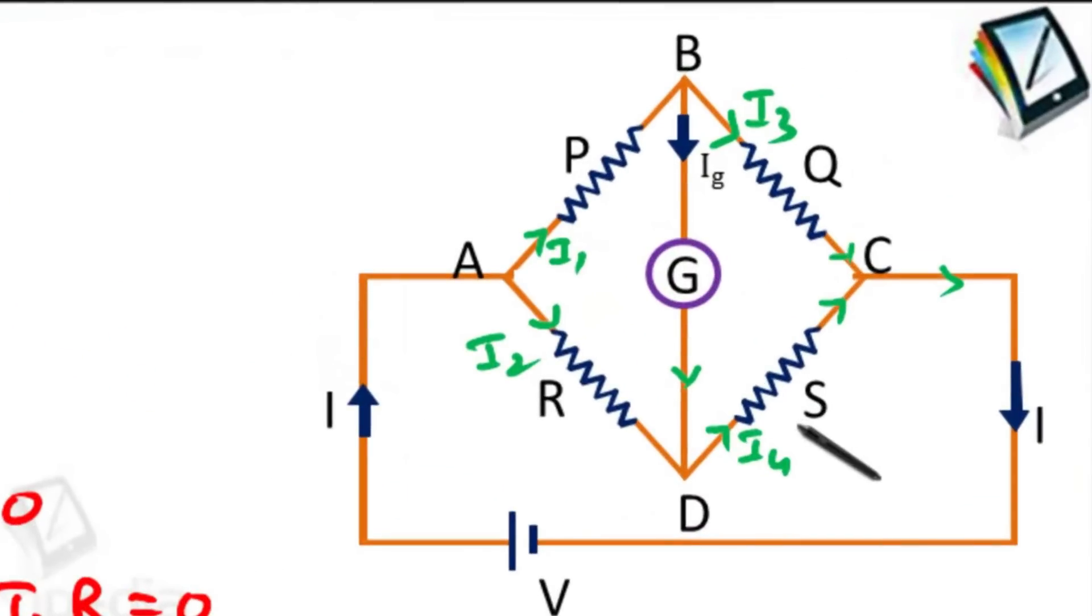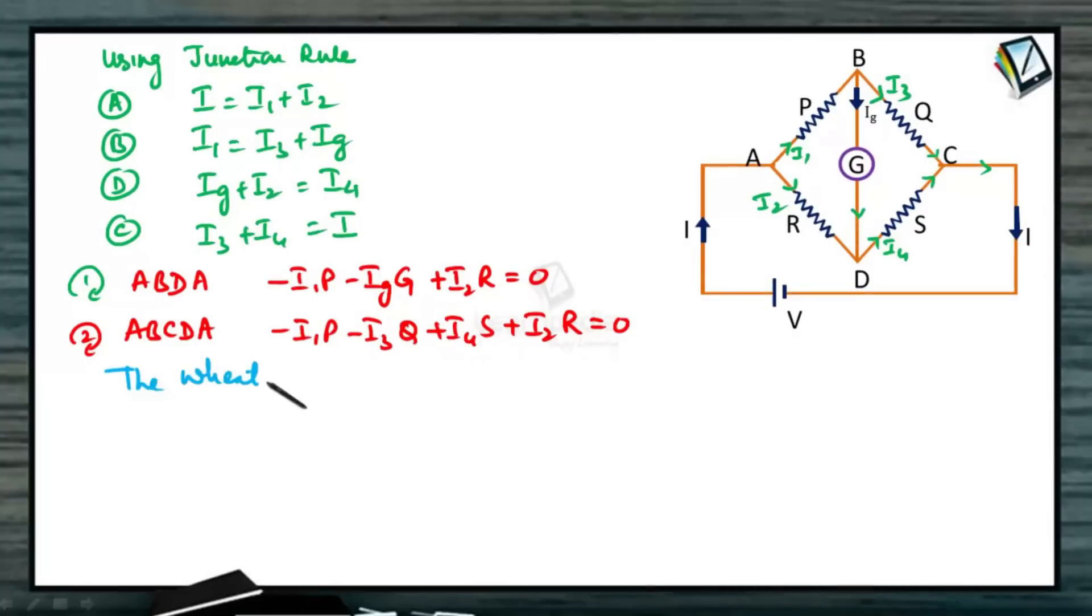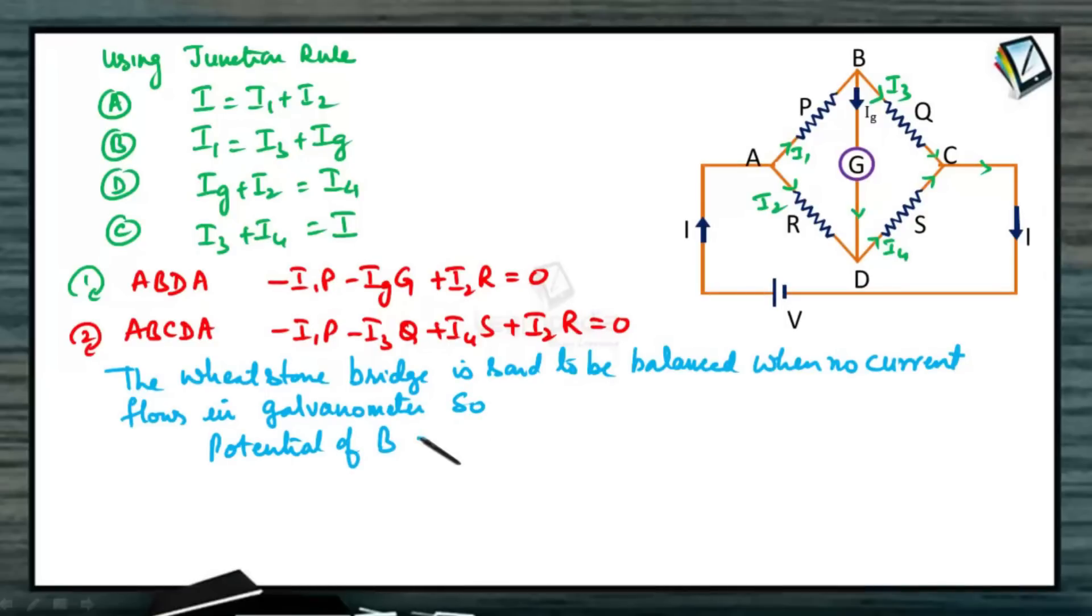Now, the resistances PQRS are variable. By adjusting the resistances PQRS, we can make the potential of point B and potential of point D to be same. The Wheatstone bridge is said to be balanced when no current is flowing through the galvanometer. Potential of B is equal to potential of D.